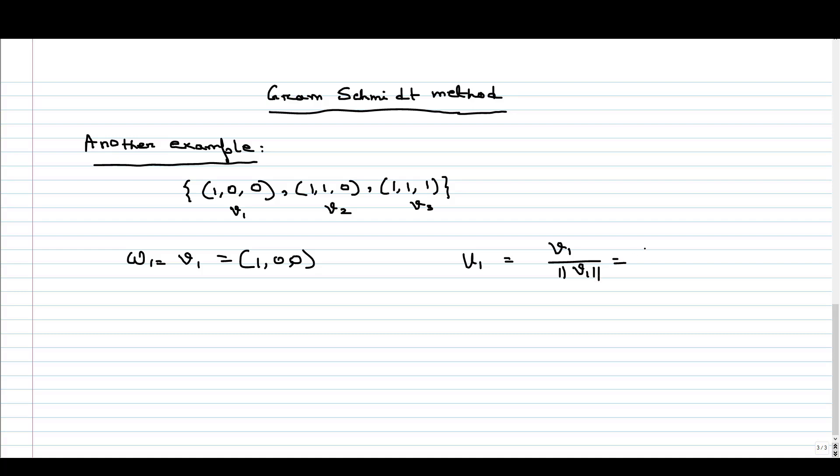So it is (1, 0, 0) by norm of V. The norm of V means it's the square root of inner product of V and V, V1 and V1. If we see the dot product of V1 and V1, and here the inner product is actually dot product we are considering, the norm of first vector is 1.